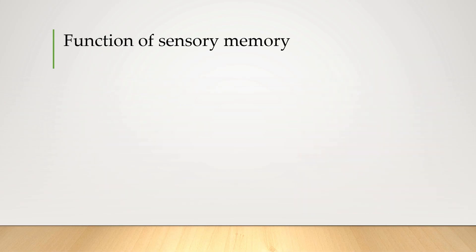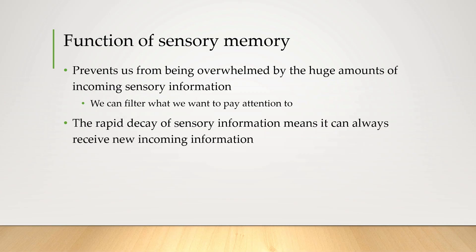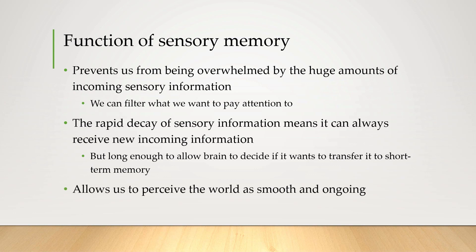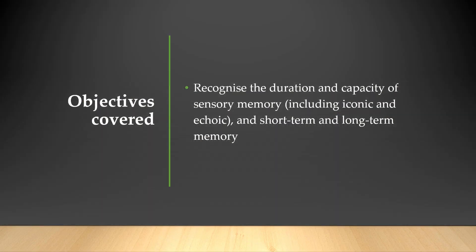Sensory memory — like iconic and echoic memory — is so important because it prevents us from being overwhelmed by huge amounts of incoming sensory information. It means we can filter what we want to pay attention to, so we might be taking everything in but only register it if we want or need to. The rapid decay of sensory information is also an advantage, because it means new incoming information can always be received, while still being held long enough for the brain to decide if it wants to transfer it to short-term memory. All this means we perceive the world around us as smooth, ongoing, and continuous. That concludes this introduction to how memory works — I hope you remember it for more than just three or four seconds, and I'll see you in the next one.